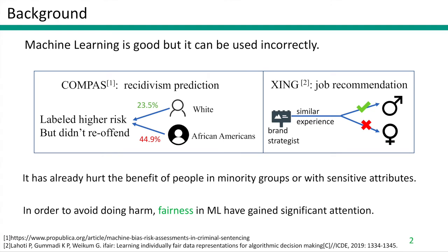We are at an age where many things have become or are becoming automated by machine learning. In practice, machine learning is good, but it can be used incorrectly. For example, COMPAS, used for recidivism prediction, correctly predicts recidivism 61% of the time, but blacks are almost twice as likely as whites to be labelled high risk but not actually re-offend. Amazon's hiring tool was found to rank less qualified male candidates higher than more qualified female candidates. This unfairness in machine learning has already hurt the benefits of people in minority groups or with sensitive attributes.